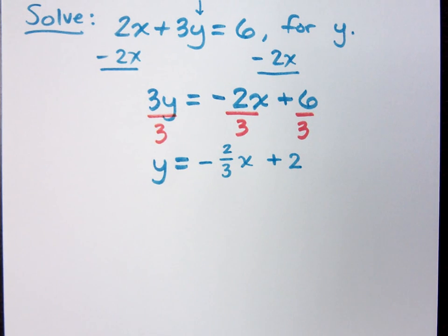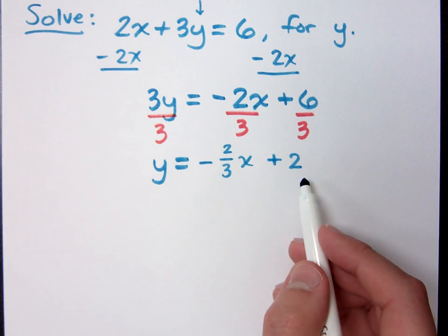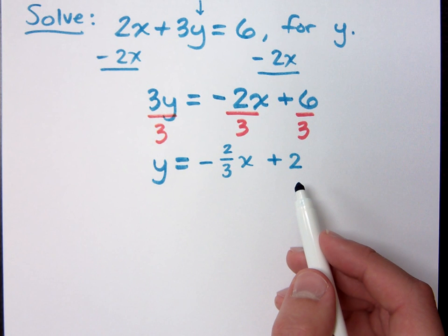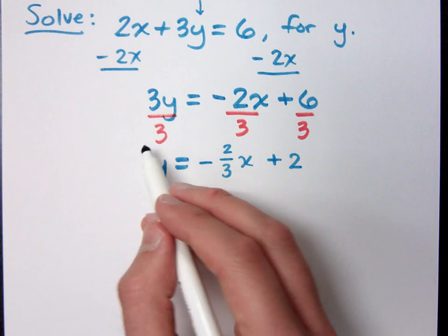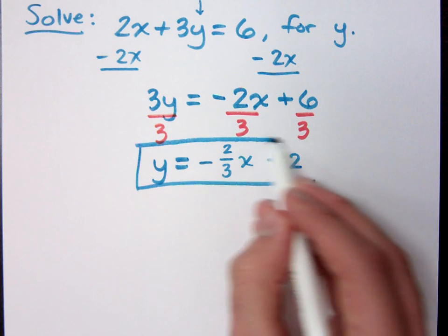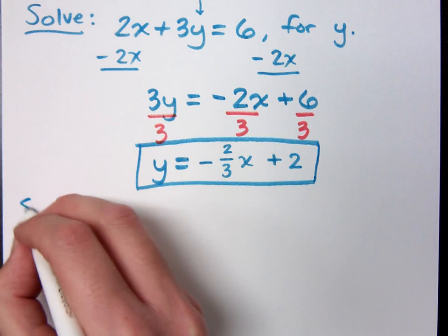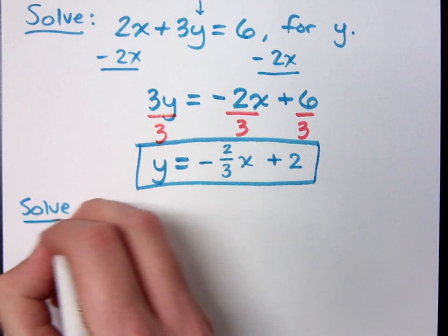All right. So, is y completely by itself? Is everything here simplified? Yes. Yeah, you can't. I mean, 2 is 2. You can't break down 2 thirds anymore, so you're done. Okay. Let's do another one of these.